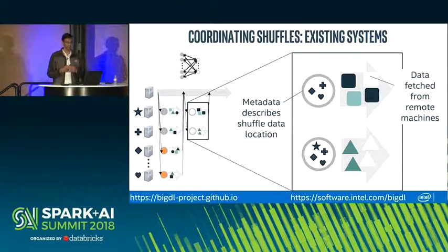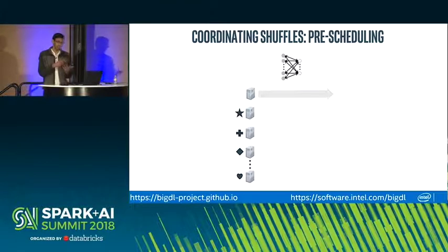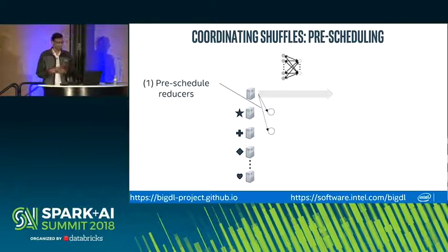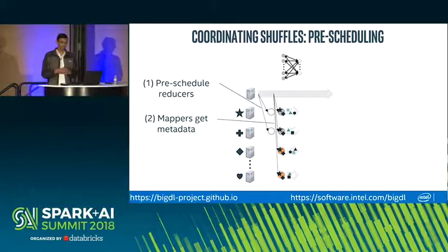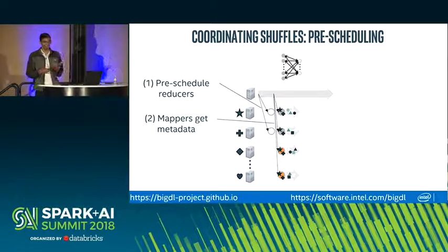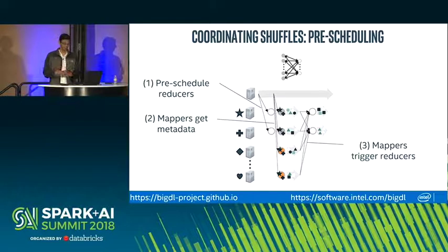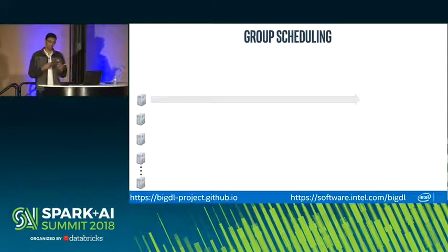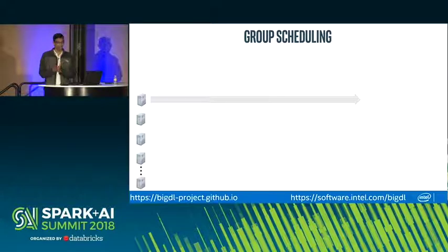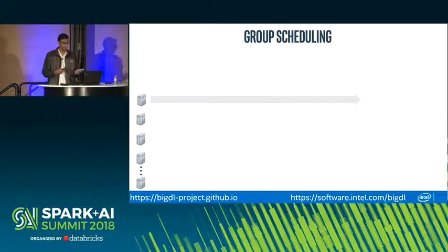With pre-scheduling reducers, we invert this process: instead of scheduling reducers after mappers complete, we pre-schedule reduce tasks to run on specific worker nodes. When launching mappers, we encode metadata about where their output should go when they finish. This means map tasks, once complete, can directly trigger the reduce tasks without any coordination with the centralized driver or master node — removing that synchronization barrier between map and reduce stages.